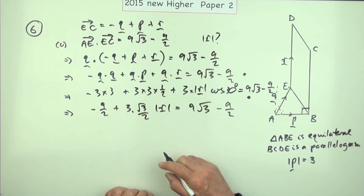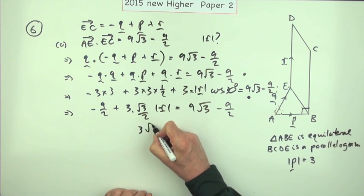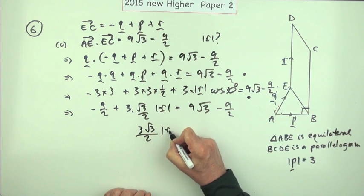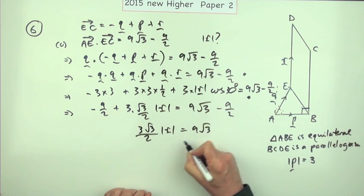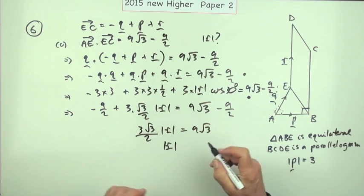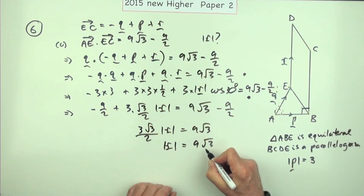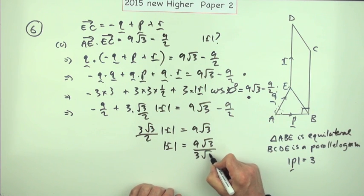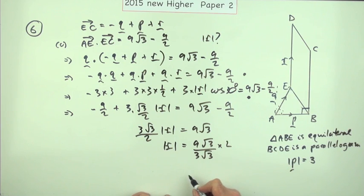Those will cancel out when you bring them over, so you're just left with 3 root 3 over 2 times r equals 9 root 3. You could think things cancel out or just take it all over, divide by 3 root 3, multiply by 2, and you've got the length of r.